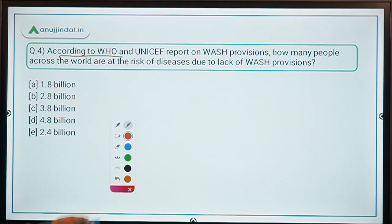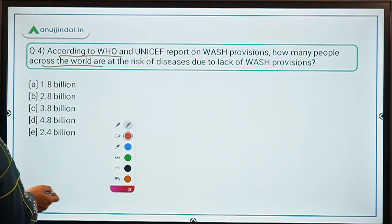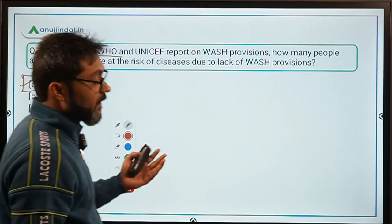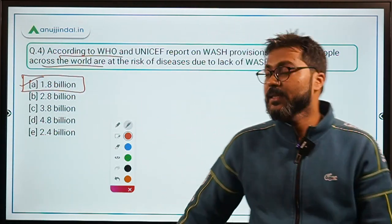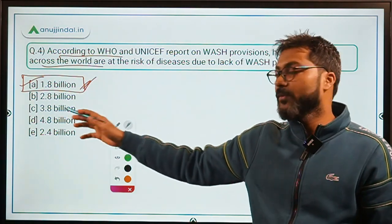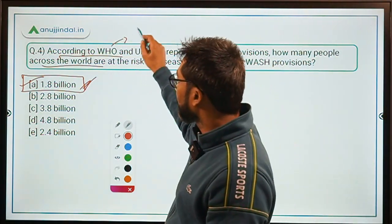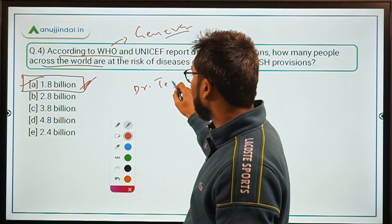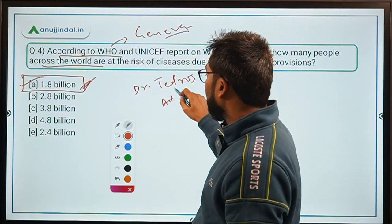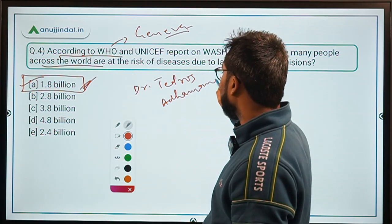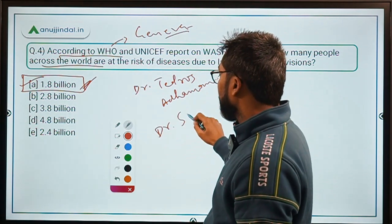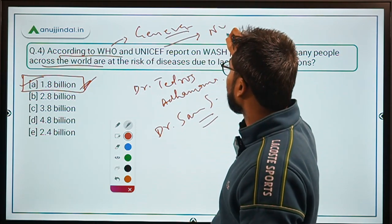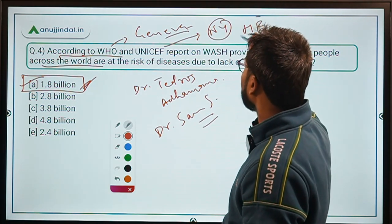According to the WHO-UNICEF report on WASH provisions, the number of people at risk of diseases due to lack of WASH provisions is 1.8 billion — so option A is the correct answer. WHO is headquartered in Geneva and Dr. Tedros Adhanom is its chief. The Chief Scientist at WHO is Dr. Soumya Swaminathan, who is Indian. UNICEF is headquartered in New York, and Henrietta Fore is its current chief.